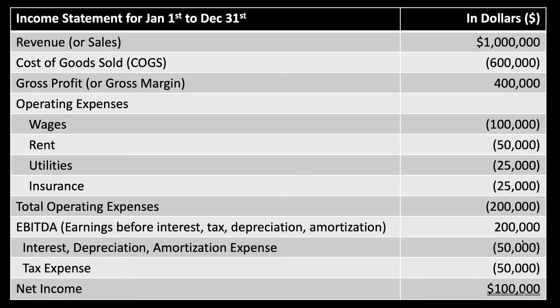Our top line — you'll often hear people say "top line revenue" — refers to the very first line of your operating statement. Top line revenue, often called sales, but for our class we'll say revenue. In this basic example, say it's a million dollars. The next thing that gets recorded is the cost of goods sold, or COGS. That's a very common acronym. So we have a million dollars in revenue and $600,000 in cost of goods sold, giving us a gross profit of $400,000.